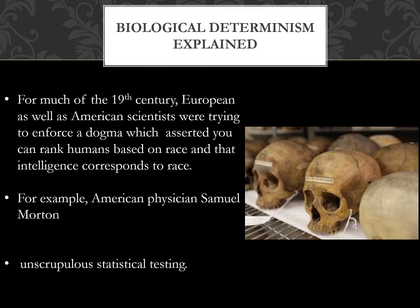Stephen Jay Gould later ran Morton's numbers and corrected for the statistical bias, finding quite the opposite of what Morton reported. Morton had originally claimed Africans have much smaller brain and skull sizes than Europeans, asserting that racism was justified. Gould actually found that Africans and some aboriginal populations, as well as populations of South America, have larger skull sizes than Europeans and Americans. Modern biology, however, recognizes a wide degree of variation among all members of any human grouping.